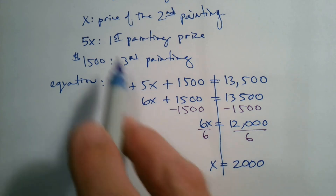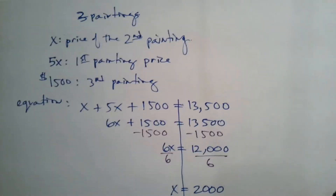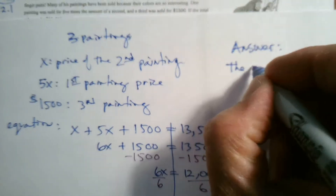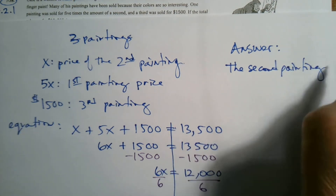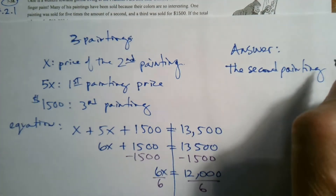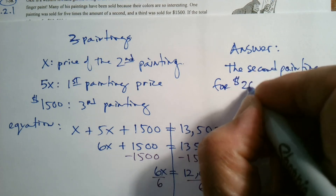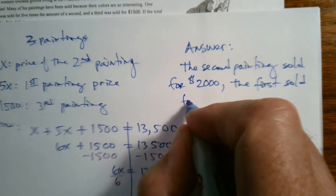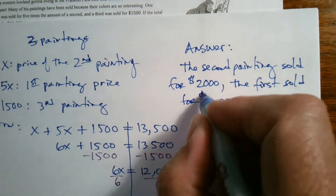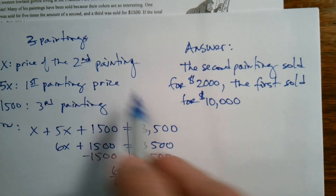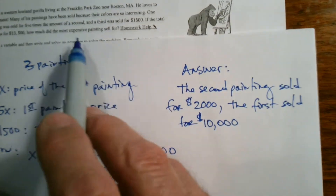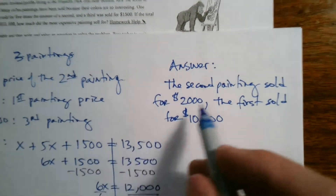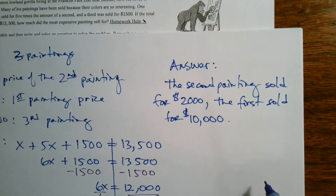So X equals $2,000, and remember X represents the price of the second painting. The second painting sold for $2,000. The first painting sold for 5X, which is five times $2,000, so $10,000. Going back to the question — how much did the most expensive painting sell for? The first painting sold for $10,000, which was the most expensive painting.